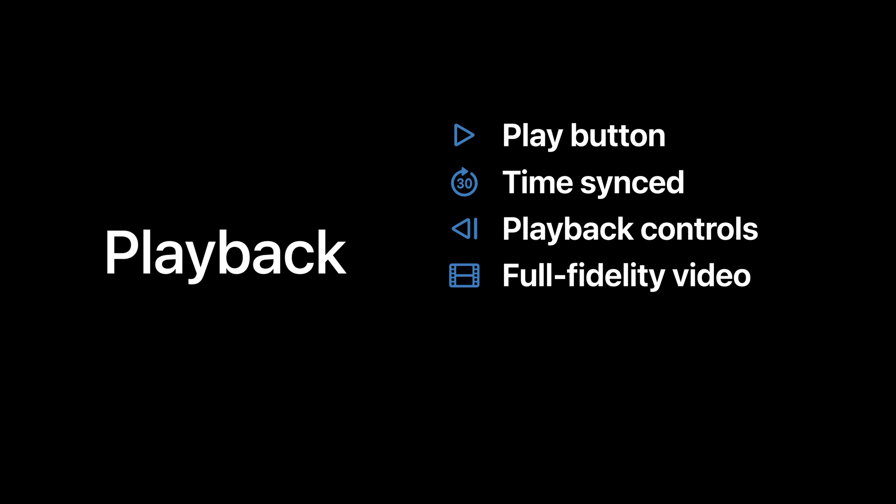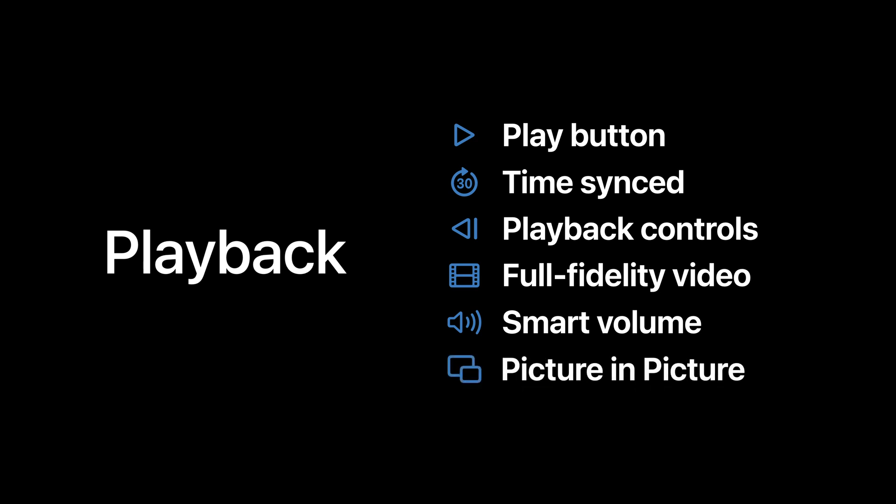By ensuring that all viewers are watching the highest quality video, they'll get an immersive social viewing experience that never compromises the quality of your content. We're also doing some groundbreaking work to make communication feel natural during playback. With Smart Volume, when people speak up during playback, we'll automatically duck the audio of the content and bring it back up when appropriate — so people can communicate via voice, video, and text naturally, just like they would if they were sitting in the very same room. And of course, it works beautifully with picture-in-picture, so the user can take your content along with them as they multitask on the device.